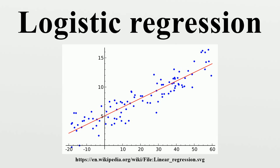The log-odds of success is then fitted to the predictors using linear regression analysis. The predicted value of the log-odds is converted back into predicted odds via the inverse of the natural logarithm, namely the exponential function. Thus, although the observed dependent variable in logistic regression is a zero or one variable, the logistic regression estimates the odds as a continuous variable that the dependent variable is a success. In some applications the odds are all that is needed; in others, a specific yes or no prediction is needed. This categorical prediction can be based on the computed odds of a success, with predicted odds above some chosen cut-off value being translated into a prediction of a success.